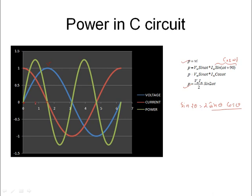When the current waveform is at a positive value and the voltage is also positive, the product gives a positive value of power. When the red current waveform is negative but the blue voltage is positive, the product gives a negative power value. So the power waveform alternates between positive and negative cycles.